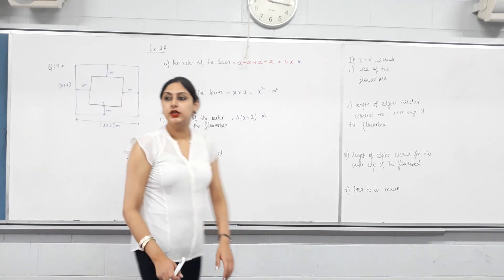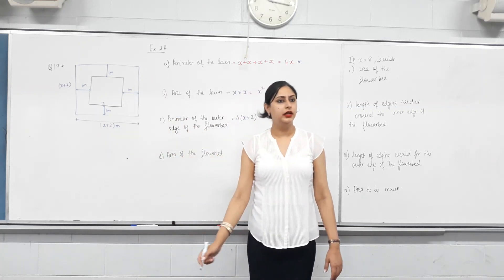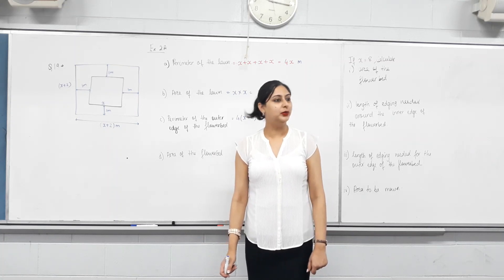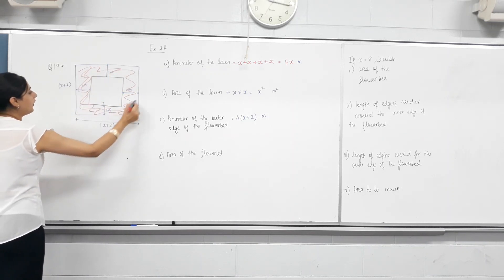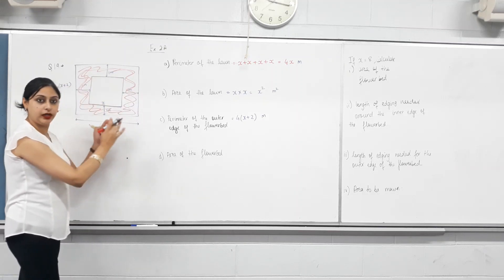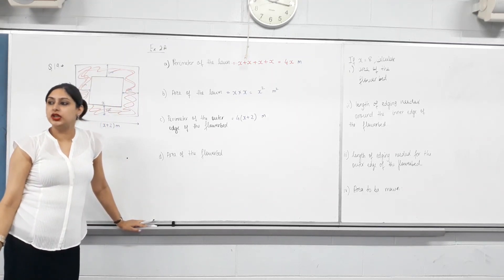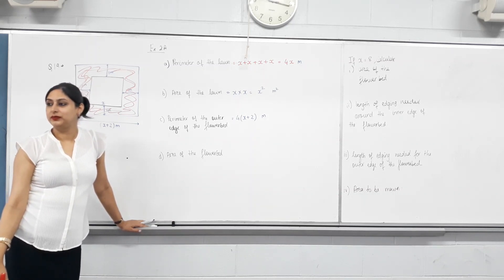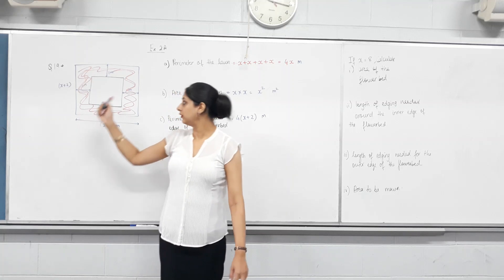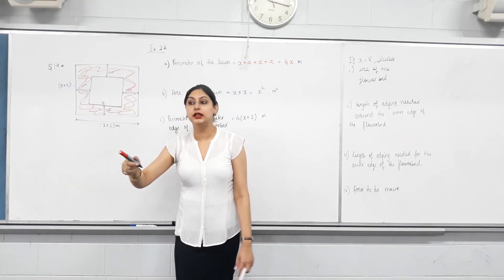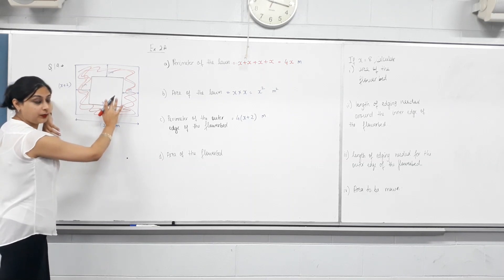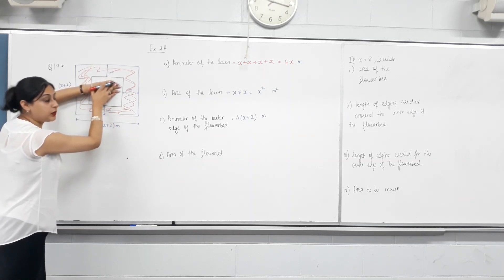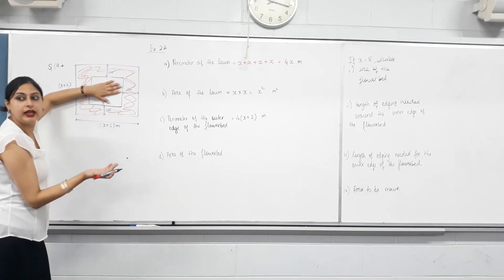Next: area of the flower bed. So what's the area of the flower bed? Is the whole big square the flower bed? No. So the flower bed is this shaded ring. How do I find the shaded area? I've got two squares — the bigger square and the little square. Area of the whole big square, take away the middle. Exactly, well done. So if I find the area of the bigger square, then take away the area of the smaller square — that's the area of the lawn — it will give me the shaded area.